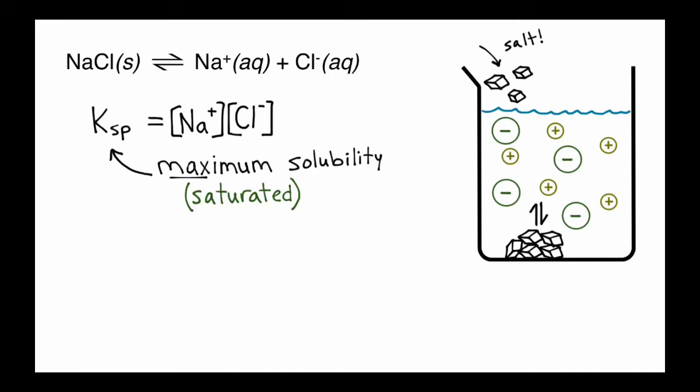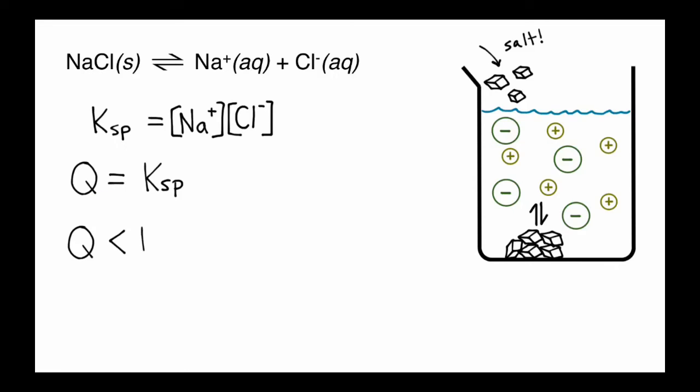So we're going to look at three scenarios here. We're going to talk about this in terms of Q, which is our solubility quotient, or our equilibrium quotient. In this case, the Q is just going to be whatever our sodium and chlorine concentrations are at the moment. We've got three scenarios. One is where Q equals KSP, one is where Q is less than KSP, and one is where Q is actually greater than KSP.